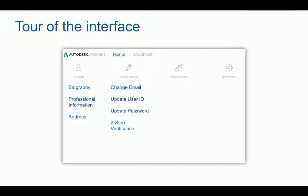Next, Security Settings is where you can update your email address, user ID, and password, and also activate two-step activation. This is a new service that adds an extra layer of authentication during your login process, also verifying through either voice, SMS, email, or through the Authenticator app.